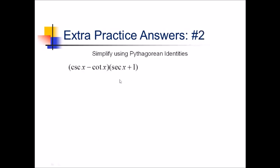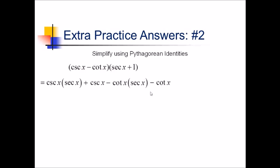On this problem, there isn't really much we can do beyond foiling this out. At some point we're going to have to turn everything into sine and cosine, but let me get everything multiplied out before I bother with that. So I'm going to have cosecant secant plus cosecant of x minus cotan secant minus cotan of x.